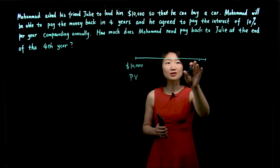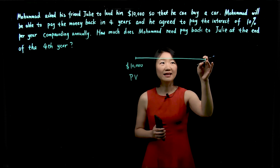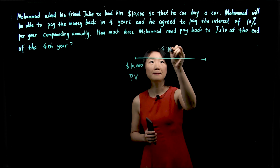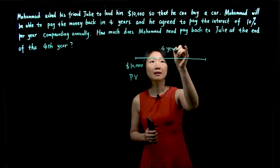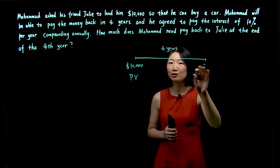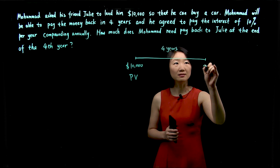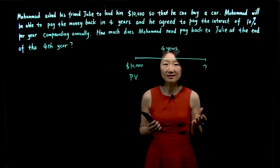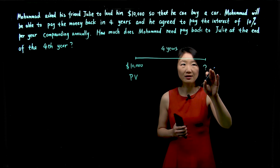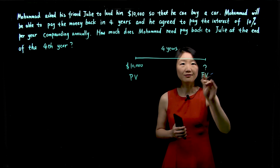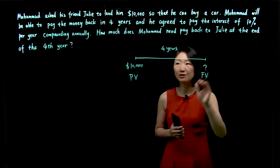In the future, at the end of the fourth year — so four years from now — Mohamed will pay back Julie an amount which we don't know yet. That's the maturity value, also called future value, FV for future value.